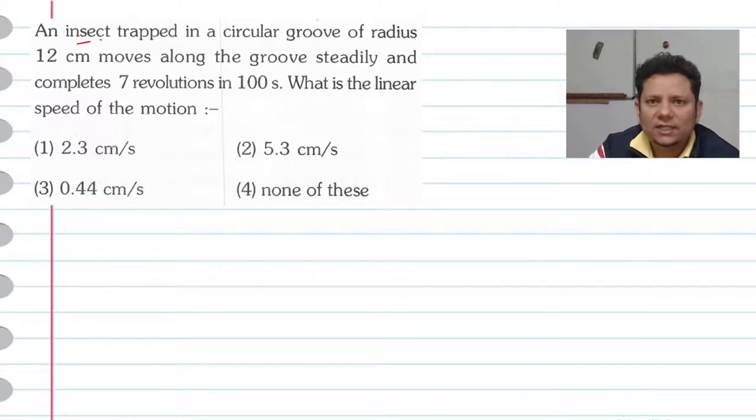Next question: An insect trapped in a circular groove of radius 12 cm moves along the groove steadily and completes 7 revolutions in 100 seconds. What is the linear speed of the motion?